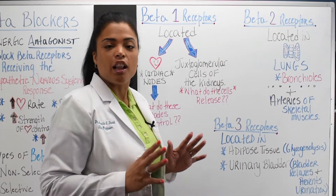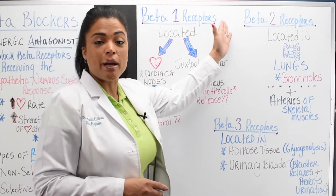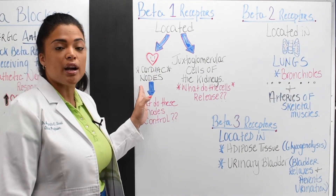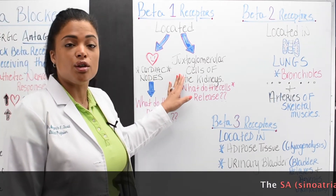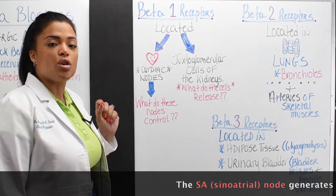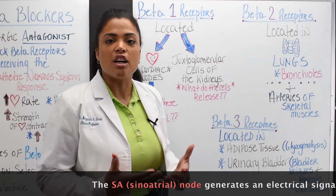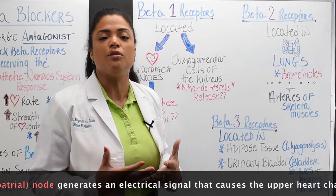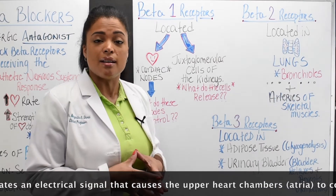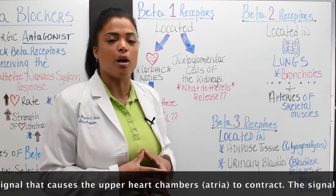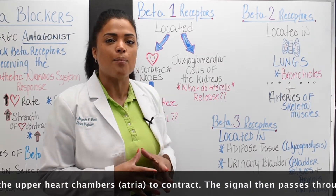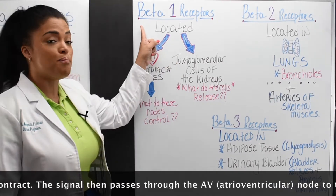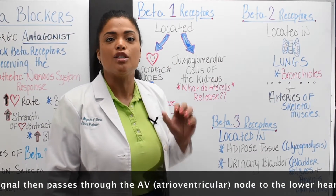Now let's talk about the different types of beta receptors. You have the beta-1, beta-2, and beta-3 receptor sites. The beta-1 receptor sites — one for one heart — are located in the cardiac node cells of your heart as well as in the juxtaglomerular cells of your kidneys. The cardiac nodes are responsible for the conduction that produces a forceful contraction of the heart. If I give a selective beta blocker like metoprolol, it will act on the beta-1 receptor sites and the heart rate will drop.